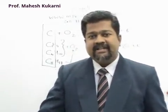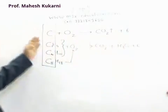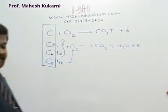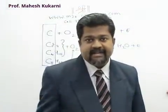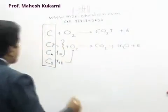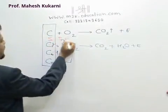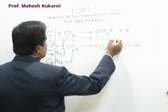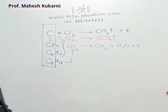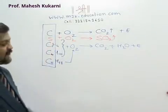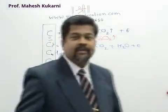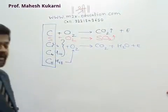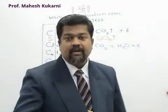When carbon is present, it combines with oxygen to give carbon dioxide. Similarly, sulfur is also present in coal, so sulfur combines with oxygen to give sulfur dioxide. Energy is released, though we are not burning coal for sulfur — but sulfur dioxide is also produced.